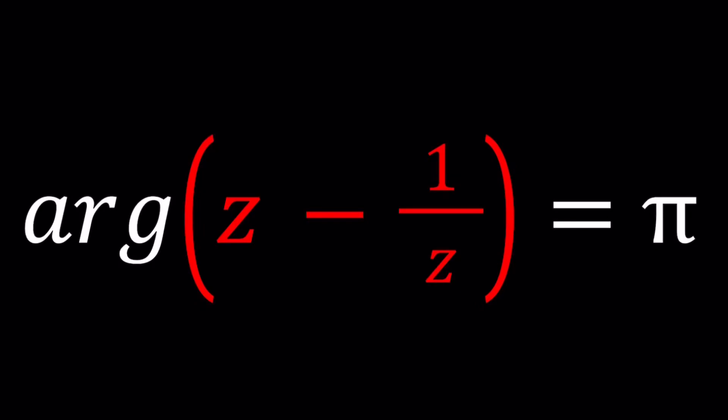Hello everyone, welcome to A plus BI. This channel is all about complex numbers, and in this video we're going to be solving a locus problem, which means we're going to try to find the set of complex numbers Z that satisfy this type of equation. Sometimes it's given with absolute values, sometimes it's given with arguments, and sometimes it's with both or a mixture of different things.